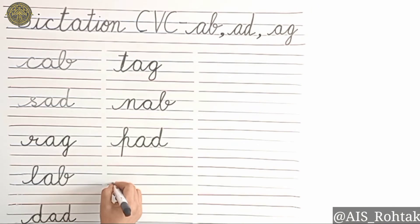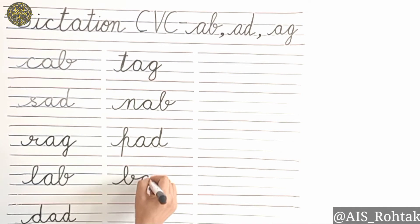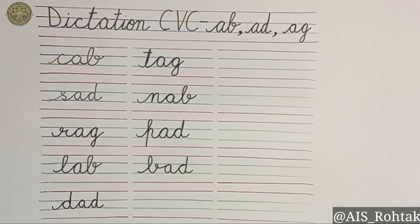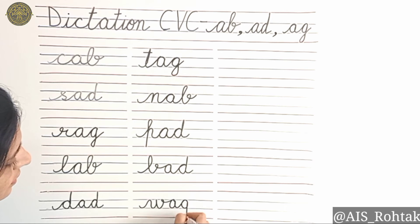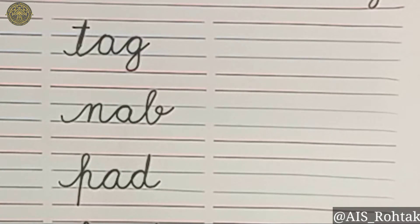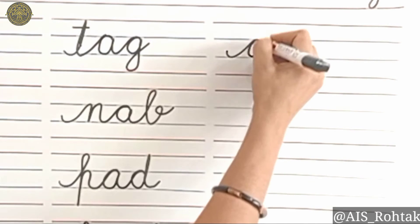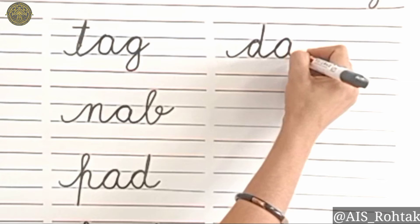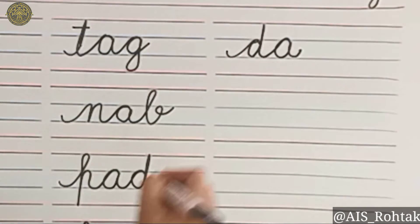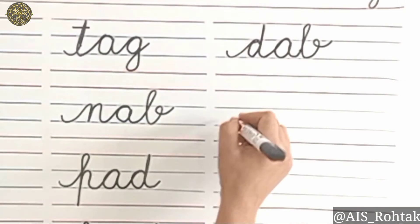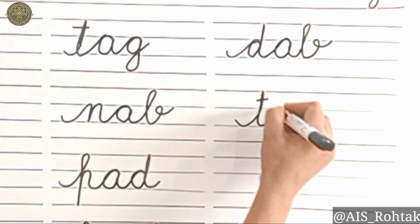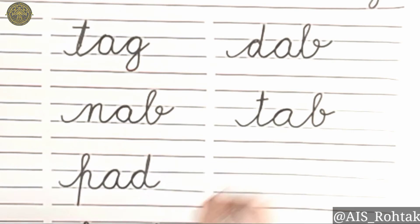Bad. P, a, d. Bad. B, e, d. Bad. Tab: t, a, b.